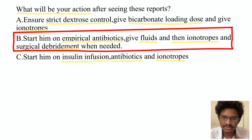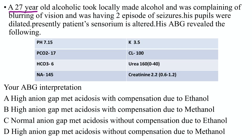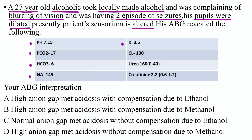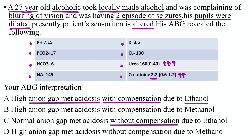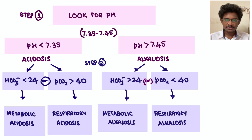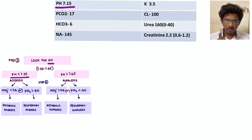Next problem: a 27-year-old alcoholic took locally made alcohol and was complaining of blurring of vision, had two episodes of seizures, dilated pupils, and altered sensorium. ABG interpretation options: high anion gap metabolic acidosis with or without compensation due to ethanol or methanol. Step one: pH is 7.15, less than 7.35 — acidosis.